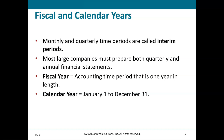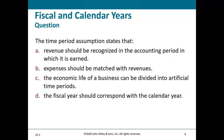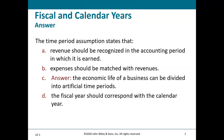Question: The time period assumption states that — a) revenue should be recognized in the accounting period in which it is earned, b) expenses should be matched with revenues, c) the economic life of a business can be divided into artificial time periods, or d) the fiscal year should correspond with the calendar year. Three of these are true, but the answer is C — the economic life of a business can be divided into artificial time periods.